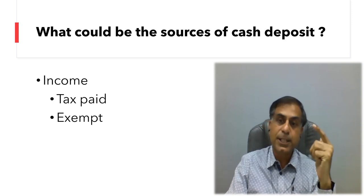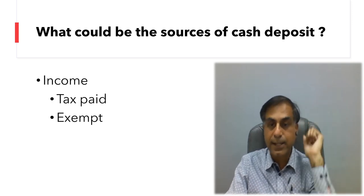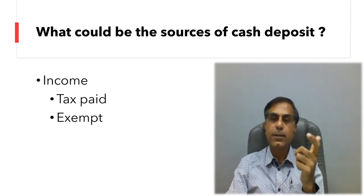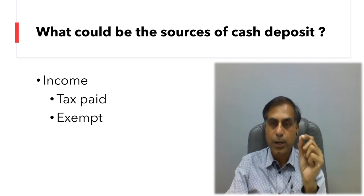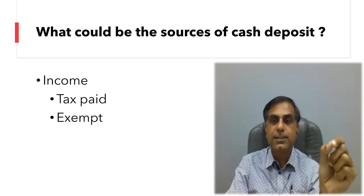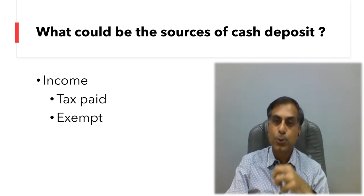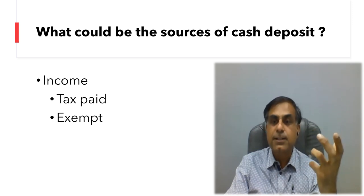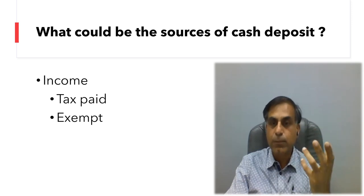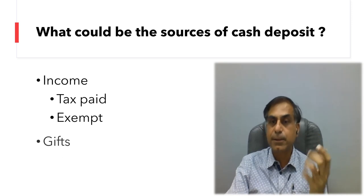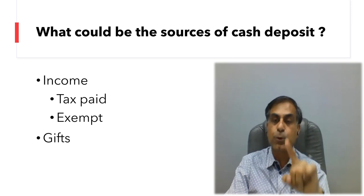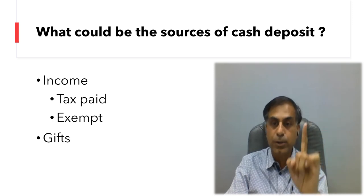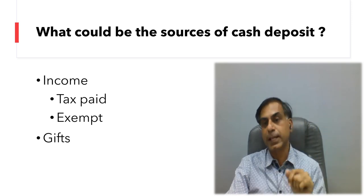Sometimes people say they had exempt income — say agriculture income. You need to establish your agriculture activity: your land has cultivation, you have certain mandi receipts. If you can prove that, the department may accept it provided you have also shown exempt income in your return. If you have not shown it in the return, you can still prove it provided you have documents to establish the source of agriculture income.